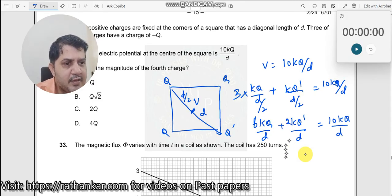So now what will happen? This will be 2kq dash divided by d is equal to, when this goes that side, I will become 10 minus 6 which will become 4kq divided by d.